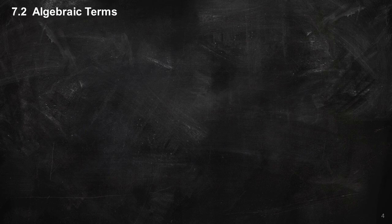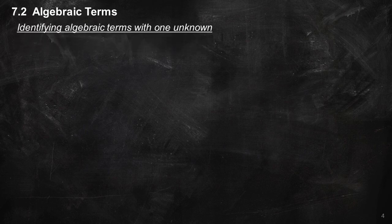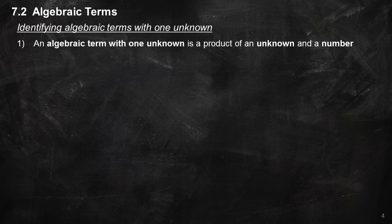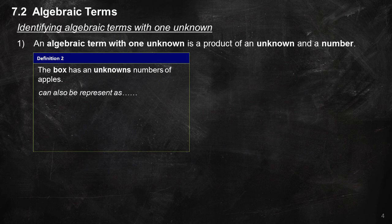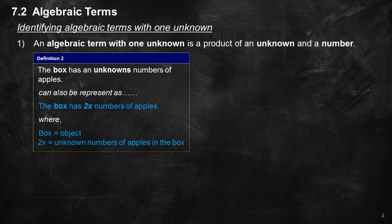7.2 Algebraic Terms. Identifying algebraic terms with one unknown. An algebraic term with one unknown is a product of an unknown and a number. Definition 2: The box has an unknown number of apples, which can also be represented as: the box has 2X numbers of apples, where box equals object and 2X equals the unknown number of apples in the box.